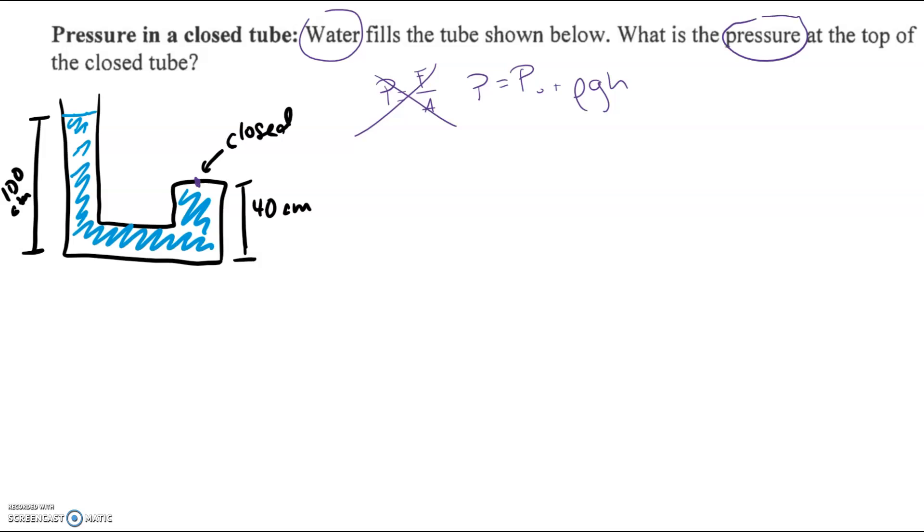What's interesting is, well, the left-hand side here, where the column of water is open to the atmosphere, we do know that up top here, P naught is atmospheric pressure.